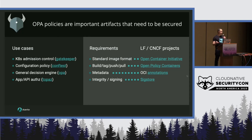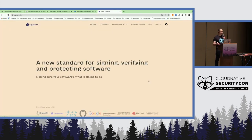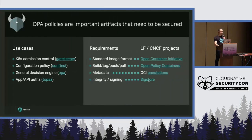The third thing we need is metadata — we need to be able to store signatures and verify them, and fortunately OCI allows us to do that. And last but not least, we have SIGStore, where the cosine tool is quickly emerging as the way to compute signatures over images and verify those signatures.